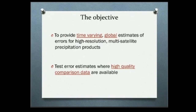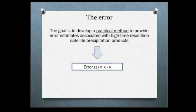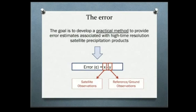Hopefully I convinced you that errors are important, and precipitation is too. So what we want to develop is a practical framework that estimates errors for high-resolution satellite precipitation products at a global scale. Since satellites are global, we also want to give an error estimate that is global. The first thing to do is really to define the error — the difference between satellite observations X and some reference Y, which when talking about precipitation is usually gauges at the ground.